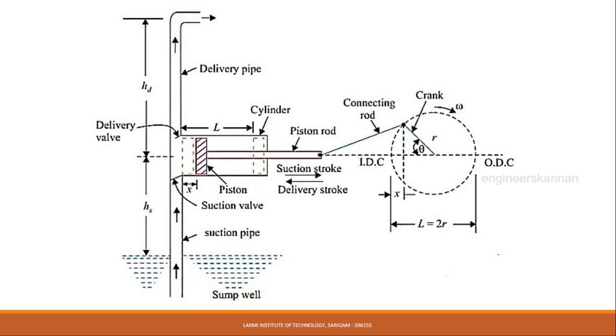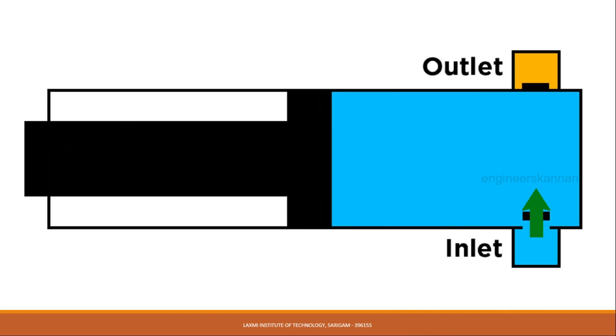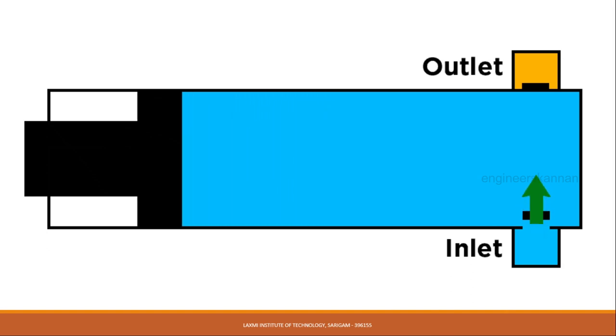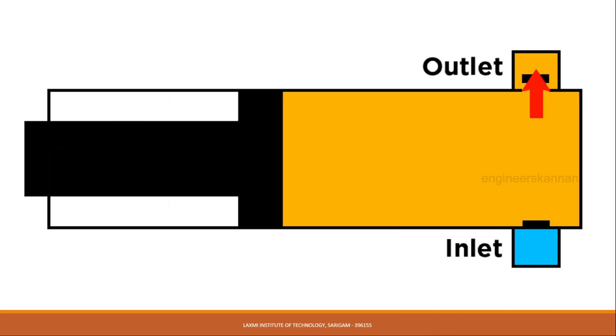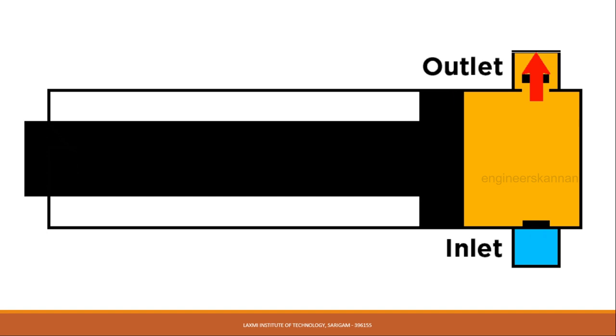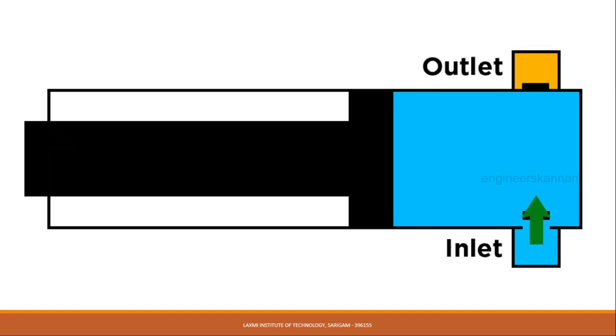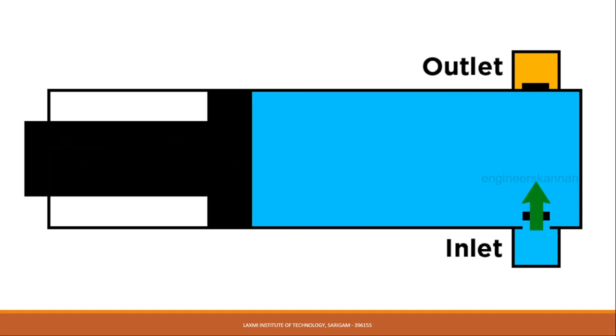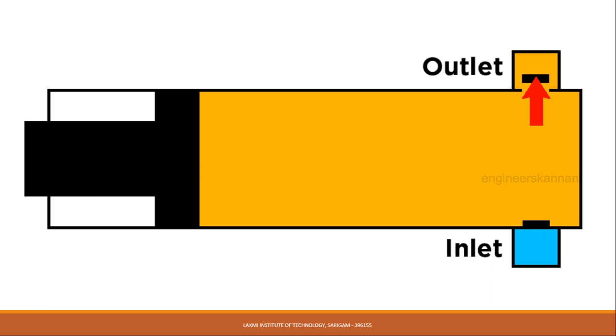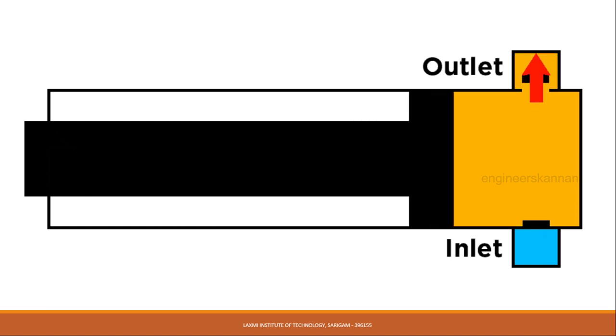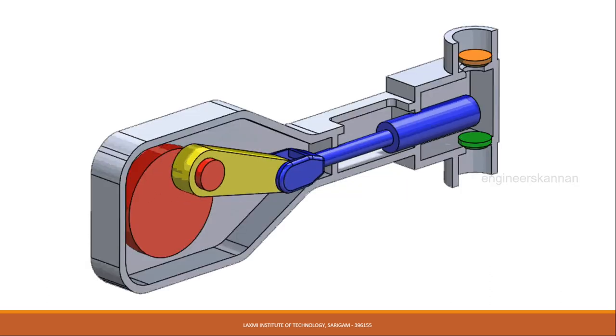Suction pipe and valve, delivery pipe and valve, cylinder, piston and piston rod, crank and connecting rod, strainer, and air vessel. When power is connected to the crank, it starts rotating and the connecting rod displaces along with the crank. This mechanical action creates vacuum inside the cylinder. When the crank moves, the suction valve opens while delivery valves get closed, and vice versa. Due to this action, water is pumped into the required place.